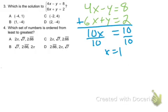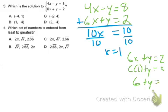So which of these has x equaling 1? We actually don't need to do any more work because only one of these has x equaling 1. But let's plug it in. So 6x plus y equals 2. 6 times 1 plus y equals 2. 6 plus y equals 2. Minus 6 on both sides. And y equals negative 4. So x equals 1 and y equals negative 4. The answer to 3 is B.